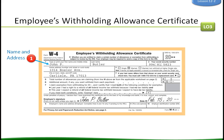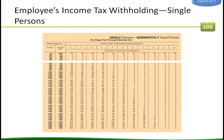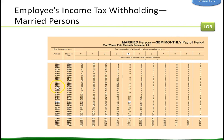Here is an employee income tax withholding sheet. The wages are listed in ranges — at least this amount but less than that amount — for single and married persons on a semi-monthly payroll period. For example, for a married person with wages between $1,460 and $1,480 semi-monthly and four allowances, the employer withholds $29 per pay period. Notice how the more deductions claimed, the smaller the amount withheld.